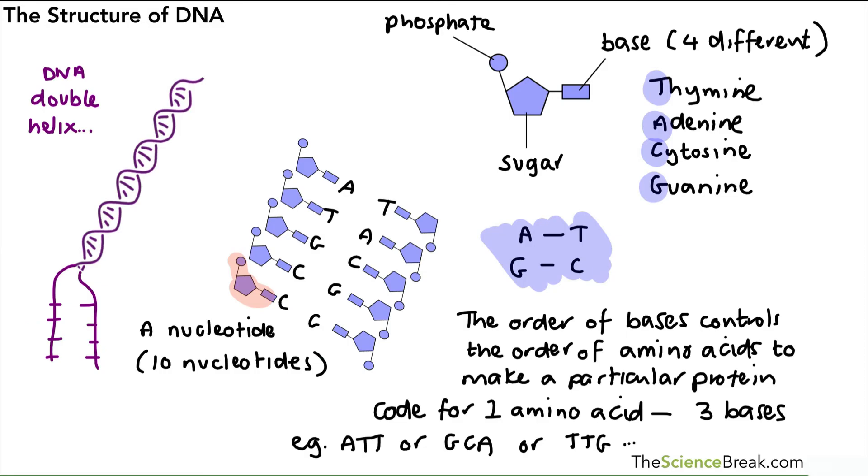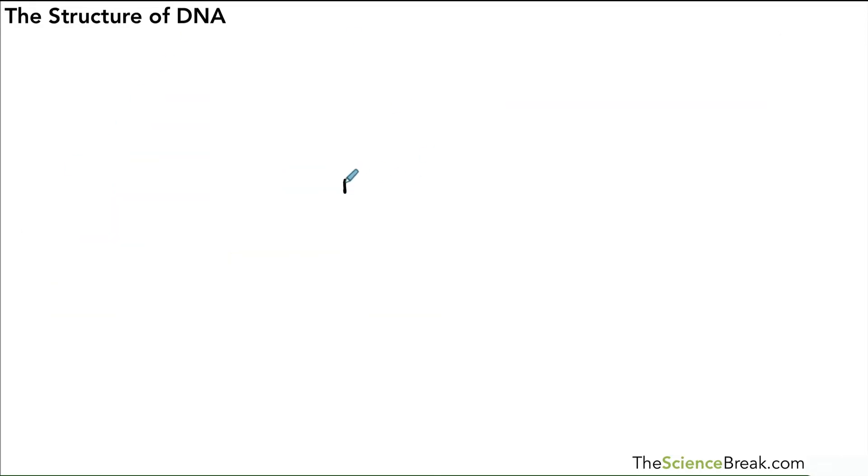And we could use some examples there: ATT, GCA, or TTG. That's just some examples I've plucked out. So that's the key important details of the structure of DNA. It's quite complicated, so we could probably just go over it one more time very quickly as a summary.